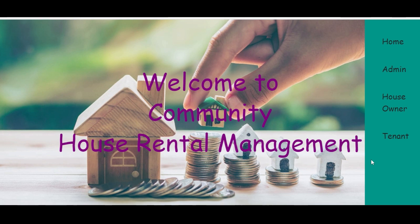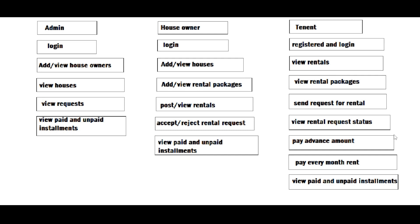This is our project website. Here we have three modules: Admin, House Owner, and Tenant. I just want to show you a flowchart which gives a clear understanding. In the flowchart, the admin can login with their predefined credentials like email and password. The admin can add house owners by giving their details and view the house owners they have added.